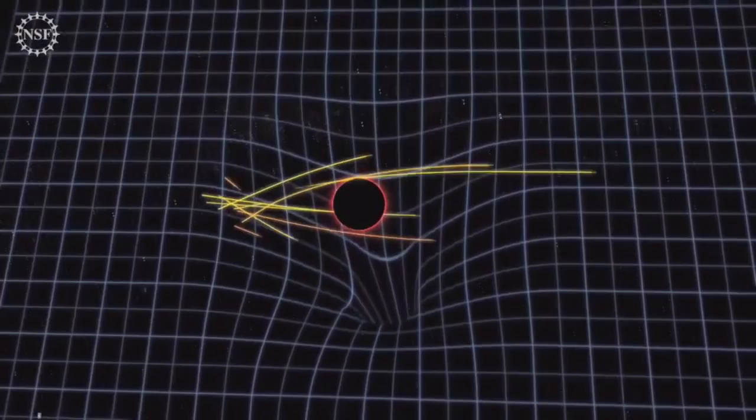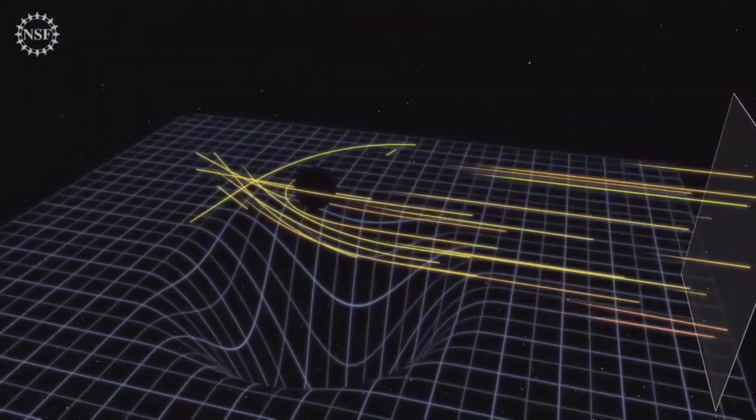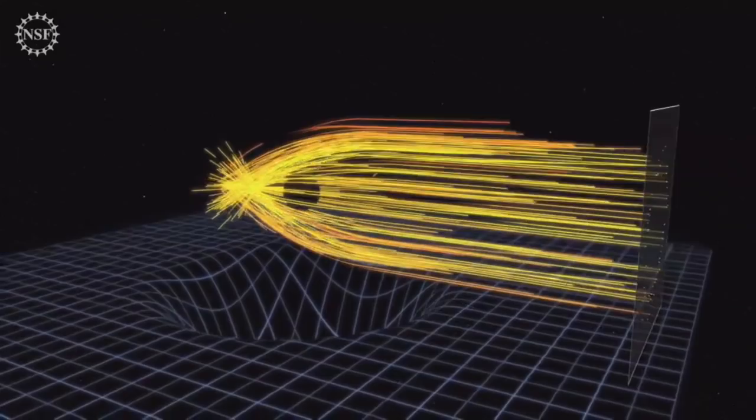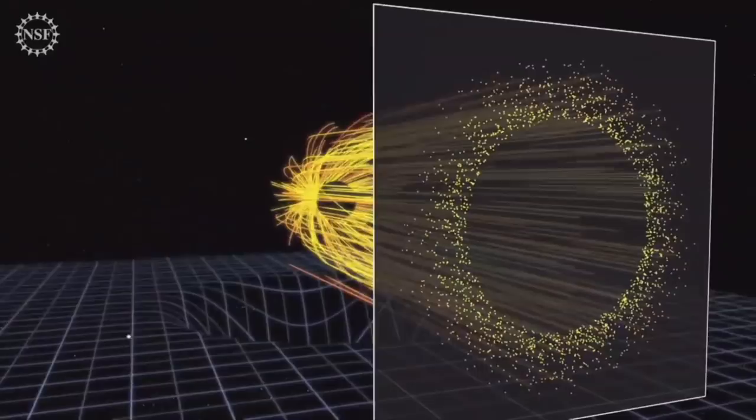In general relativity, radio waves fall just as apples do. Typically, this effect is exceedingly small, but black holes are gravity run amok. The radio waves we see in these first images orbited the black hole before beginning their 55 million year journey toward us.